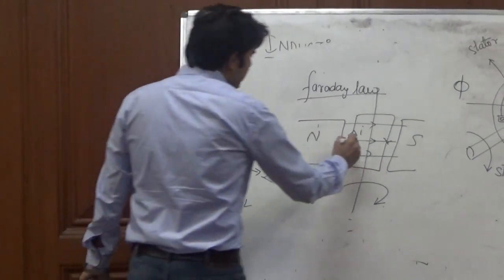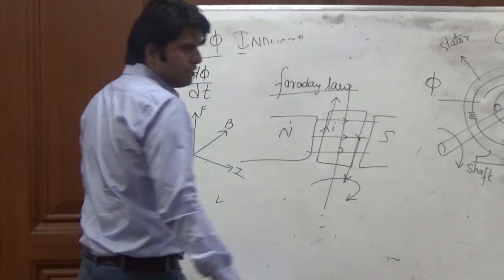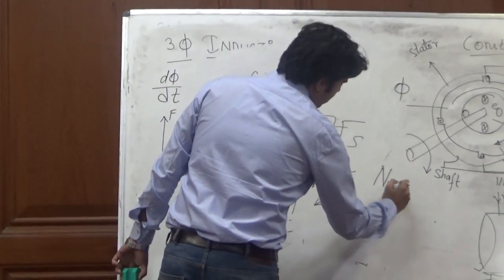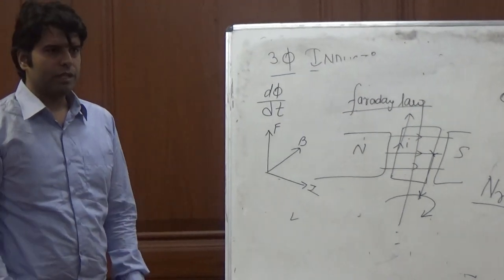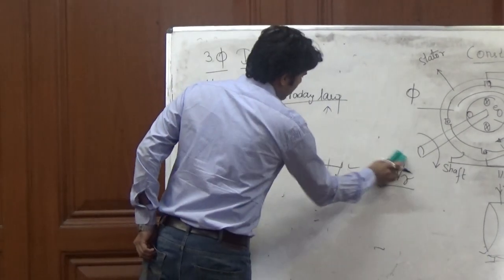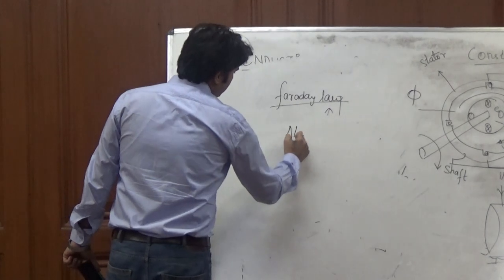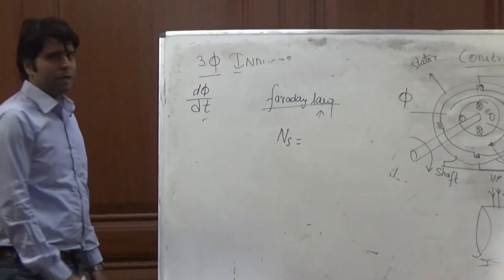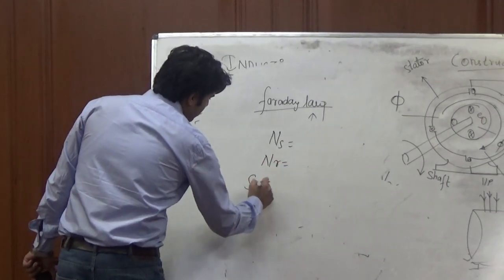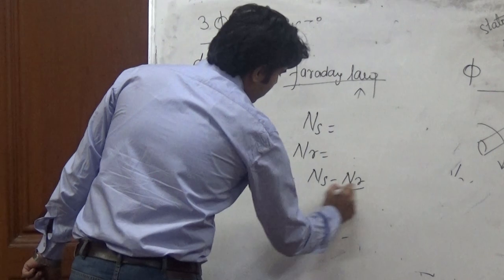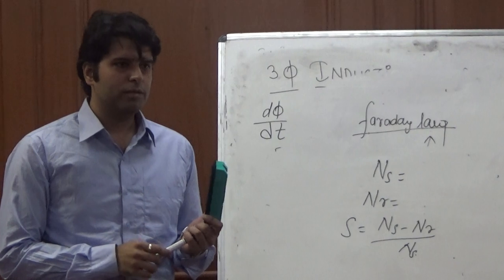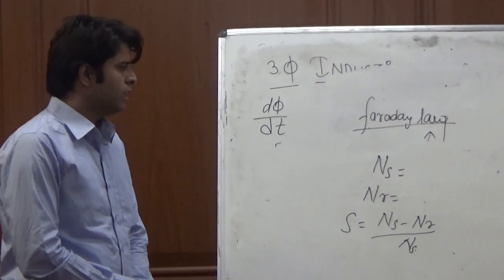So it will rotate in a certain direction and the speed of rotation is given by nr that is the rotation speed of the rotor. So there is one more term known as slip. ns was the speed of the magnetic field and nr was the rotor speed, and slip is given by ns minus nr by ns. We can study more about it. Thank you.